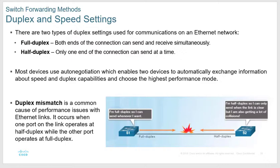Full duplex is like a phone call — you can send and receive in both directions, so there are no collisions. Half duplex is like a walkie-talkie — you can only send or receive one at a time, which causes collisions. A duplex mismatch happens when your PC is set for full duplex but the switch port is set for half duplex or vice versa. Cisco switches default to auto-negotiate full duplex, but if negotiation fails, the port drops to half duplex — which is why you should always manually configure switch ports.